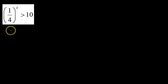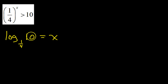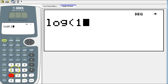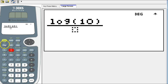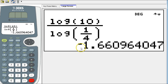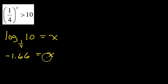If this were an equation, the first thing we would do is rewrite this in logarithmic form. In log form, we would have log base 1/4, and the 10 would come over here, and that would equal x. We can evaluate this in our calculator using the change of base formula: log of 10 over log of 1/4. That gives us negative 1.66. So negative 1.66 is equal to x — that's our critical value.